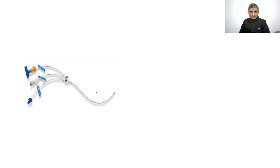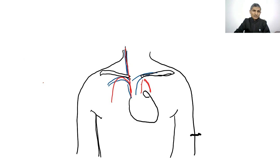This is a triple lumen central line. This part goes into the vein and these three lumens remain outside. The central line can be inserted through the internal jugular vein or subclavian vein. The tip goes up to the junction of the right atrium and the superior vena cava.